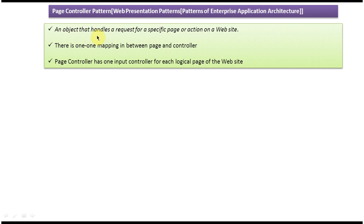The Page Controller is an object that handles a request for a specific page or action on a website. There is a one-to-one mapping between a page and its controller — meaning for each page, one controller will be there. For example, if we have 10 JSP pages, we have to write 10 controllers.